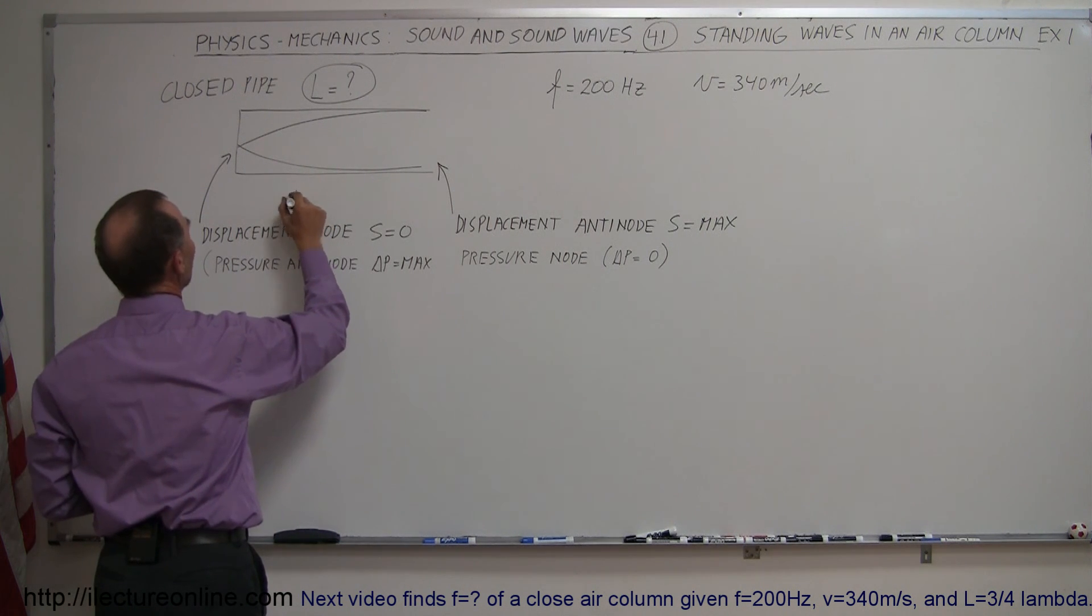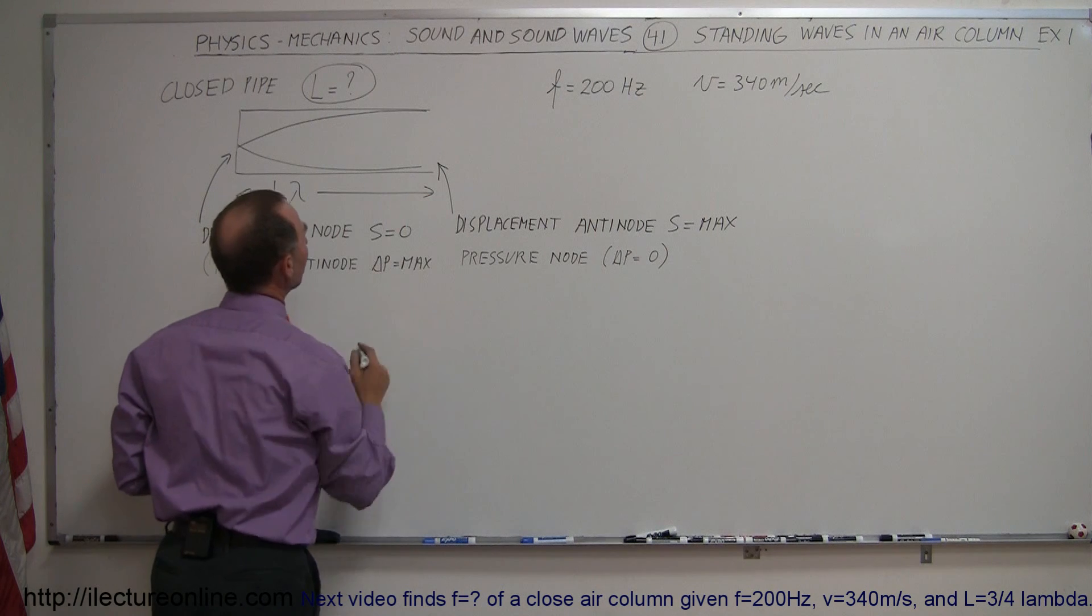This represents what we would call the displacement. Maximum displacement here, zero displacement there, and that means this would be a quarter of a wavelength. This is one quarter lambda from this one end to the other end.